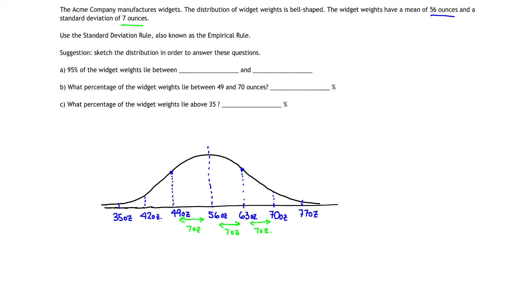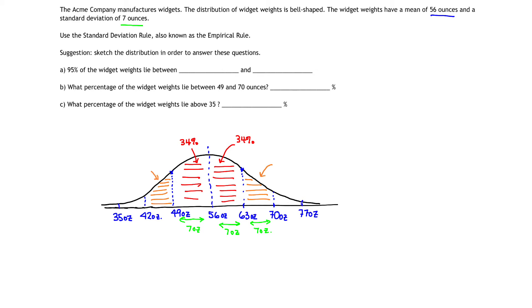Now I have my setup. According to the empirical rule, within the first standard deviation on each side, 68% of the curve lies in those two bands — that's 34% on each side. Going out two standard deviations on each side gives a total of 95% of the area shaded. Those next bands, between the first and second standard deviations, each represent 13.5% of the area under the curve.